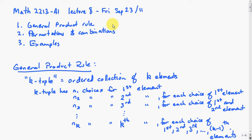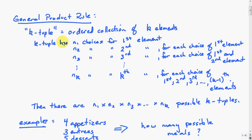Okay, welcome to lecture 8 from Math 2213. We're going to cover three things today. We're going to look at some general rules, the product rule and permutations and combinations, and we'll look at some simple examples of those. And then we'll move on to some more complicated examples as well.